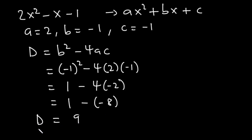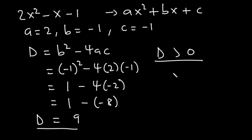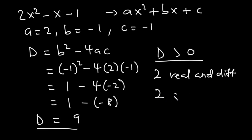So the discriminant is equal to 9. Since the discriminant, which is equal to 9, is greater than 0, it means that the equation has 2 real and different roots — or 2 distinct roots.